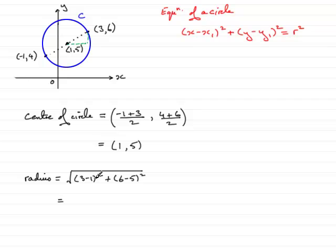So if we work this out, three take away one is two, two squared is four, six take away five is one, one squared is one. So we end up with four plus one is five. So we've got root five. That's the radius, the radius r.